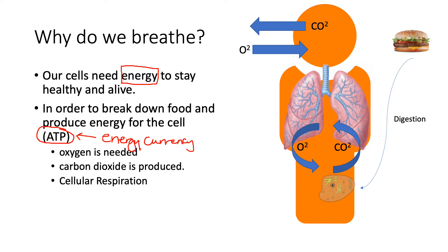In order to turn the nutrients from the food we eat into ATP, it's a process called cellular respiration that occurs in the cell. You may not remember the details of cellular respiration, and that's okay. But for this lecture, what I need you to remember is: in order for a cell to carry out cellular respiration, oxygen is required. So no oxygen, no cellular respiration, no ATP, cell death.